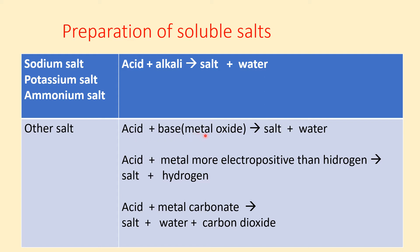The second method is acid with metal oxide. For copper sulfate, you use sulfuric acid — because sulfate is provided from sulfuric acid — and copper oxide as the base; you will get salt and water. The third method is acid plus metal that is more electropositive than hydrogen. Copper cannot be used here because copper is less electropositive than hydrogen. For example, for aluminium sulfate, you use sulfuric acid with aluminium metal.